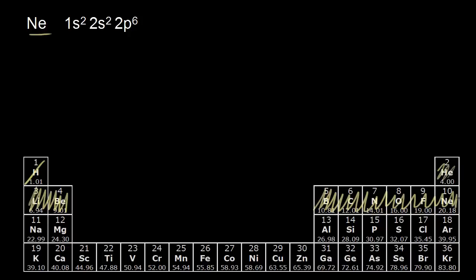For an electron configuration for an element in the third period — this would be the first period, second period, third period — let's do sodium. Sodium has 11 electrons, so one more than neon. The second shell is completely full, so for sodium's 11th electron we need to go into the third shell, the third energy level. So n is equal to three for the third shell.